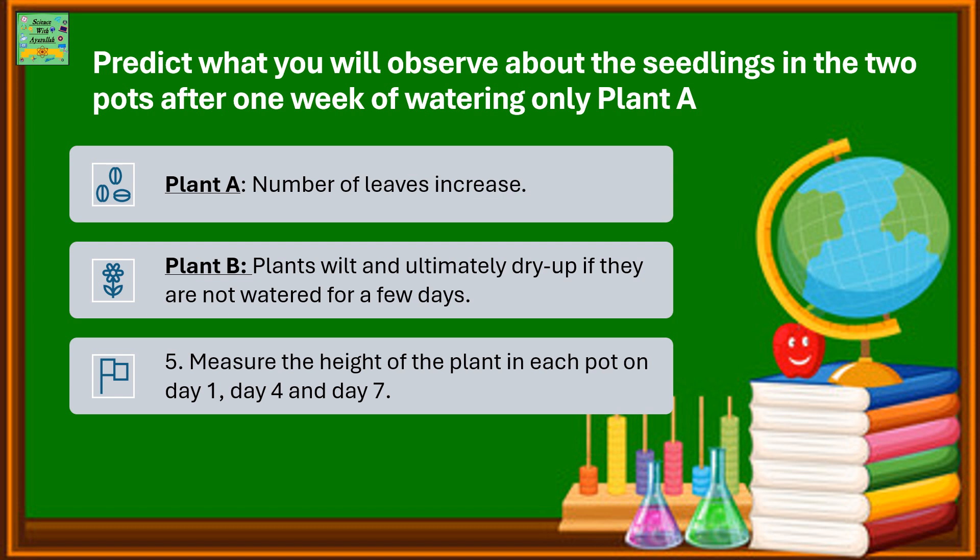Predict what you will observe about the seedlings in the 2 pots after 1 week of watering only plant A. After 1 week, in plant A the number of leaves will increase, and in plant B the plants will wilt and ultimately dry up if they are not watered for a few days.